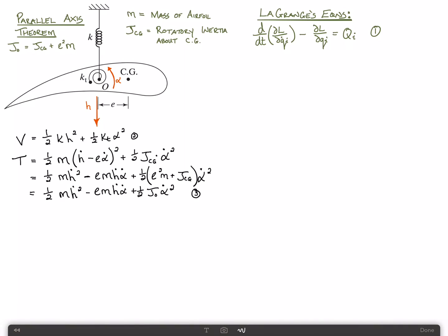Now we know that the Lagrangian L is just equal to t minus v. We'll call that equation four. And then finally, we want to substitute equations two, three, and four into Lagrangian's equations, which is one. So let me write that out. Two, three, and four into equation one.